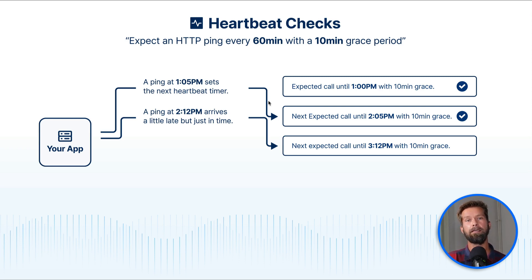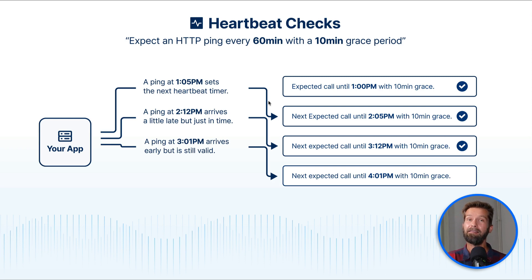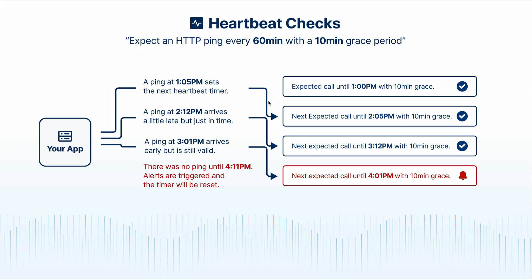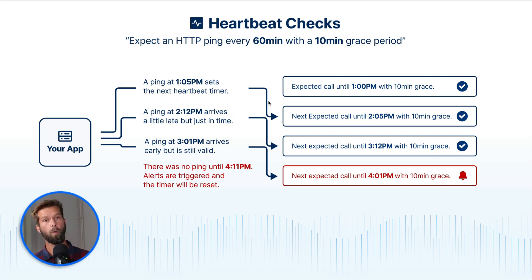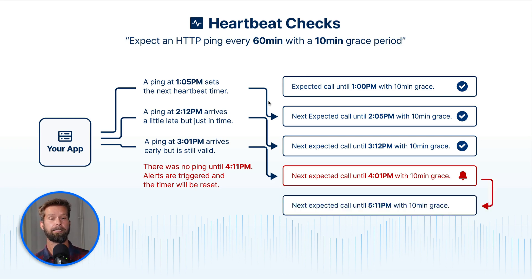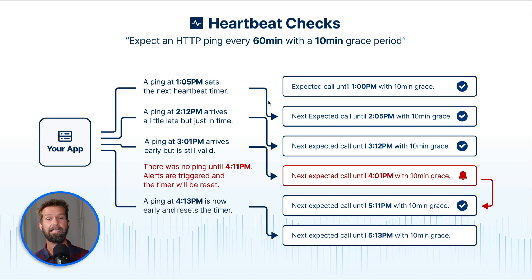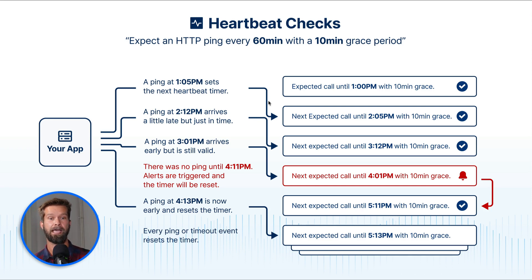So if the next call comes in at 2:12 pm it will also reset the timer so the next expected call will be at 3:12. You might ask what happens if you ping too early. If the next call comes in at 3:01 nothing bad happens because it was within the time frame of the period plus grace, and it will just reset the timer yet again. But if a call is late — after the call at 3:01 we expect the next call until 4:01 with 10 minutes of grace, so 4:11 pm. If there was no HTTP call by then, this will trigger an alert. The sent alert will then reset the timer, so the next expected heartbeat check will be at 5:11 plus 10 minutes of grace. And if there is now a ping because your script just took longer than 10 minutes to execute, this will reset the timer so we will have the next expected call at 5:13 with 10 minutes of grace.